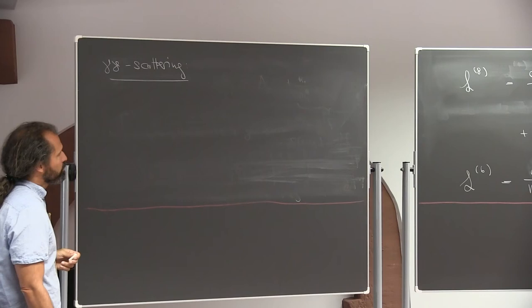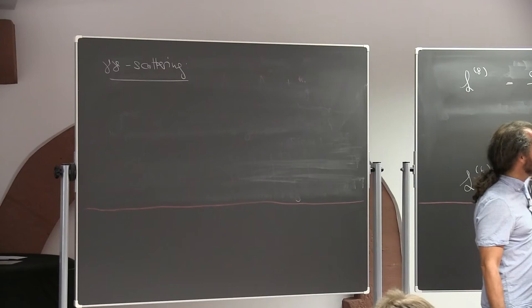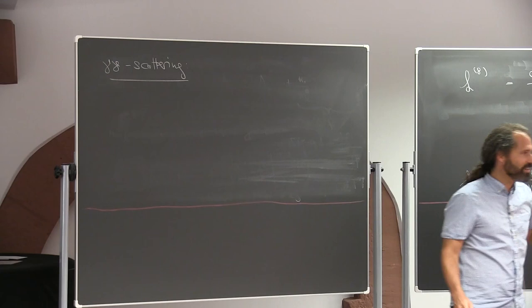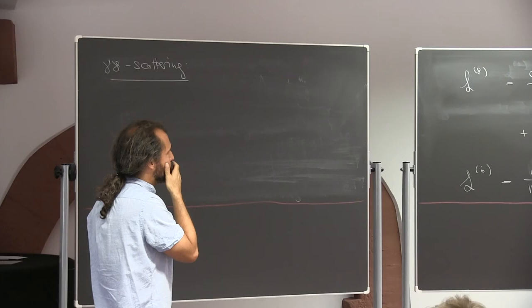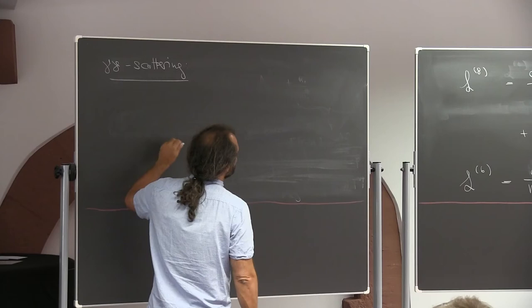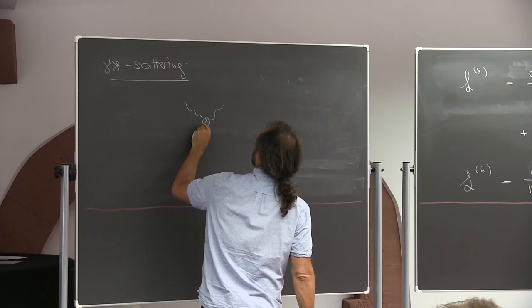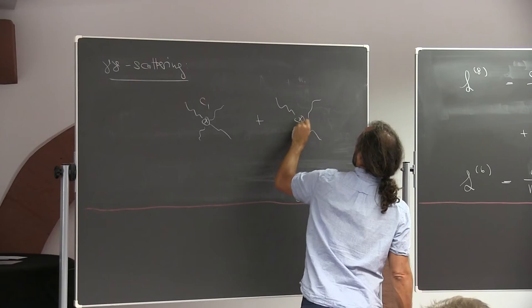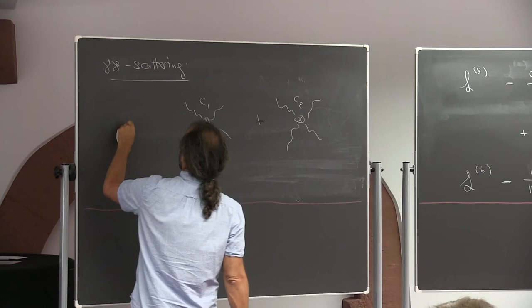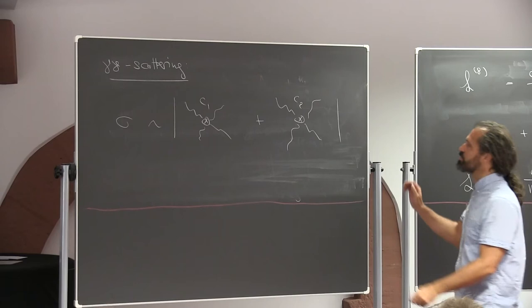To do photon-photon scattering, you will have to derive Feynman rules for F^{mu nu} F_{mu nu} squared — the F^4 operator. That is somewhat painful because it has four fields and four derivatives. The Lagrangian has two terms, each with four powers of the photon field. To compute the cross section, you sum these two contributions to get the amplitude and then square it.